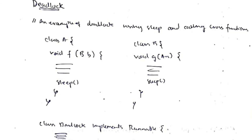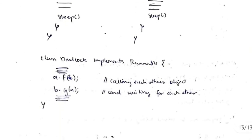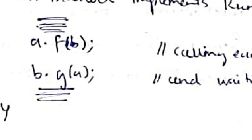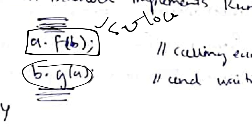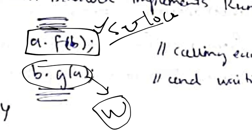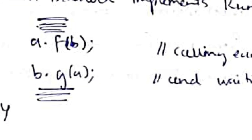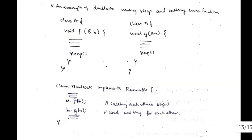To avoid deadlock, we can use a monitor. In a monitor, when one function is executing, the other function cannot execute its own functions. This is achieved using a set-and-lock mechanism: if one function is executing it sets a lock, and if another function wants to execute it enters a waiting state. After the first finishes, it releases the lock and the second executes — preventing deadlock.